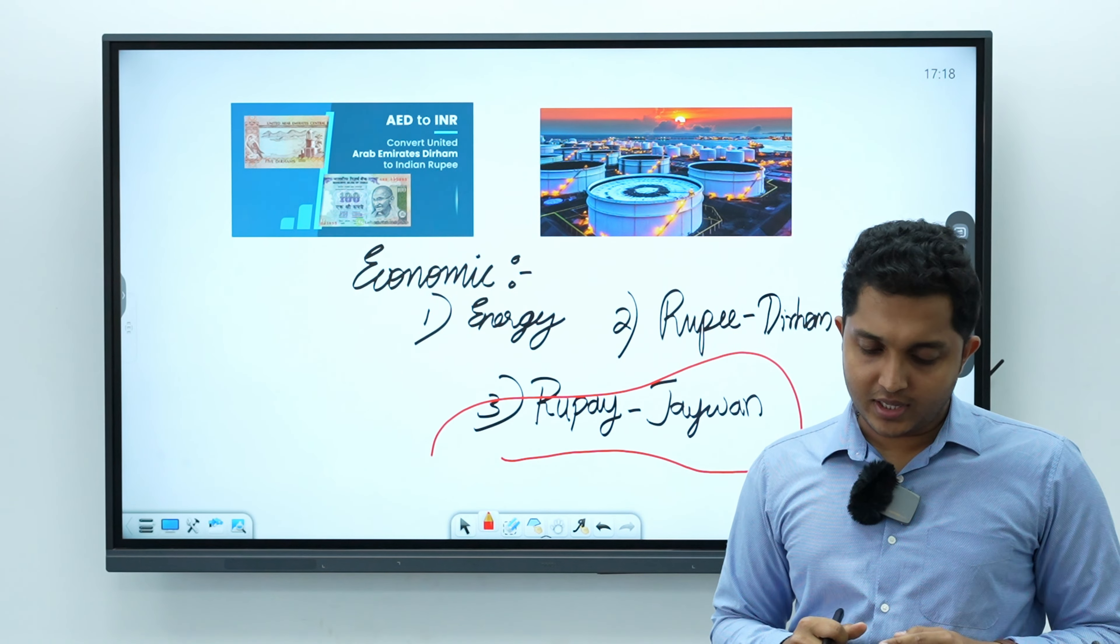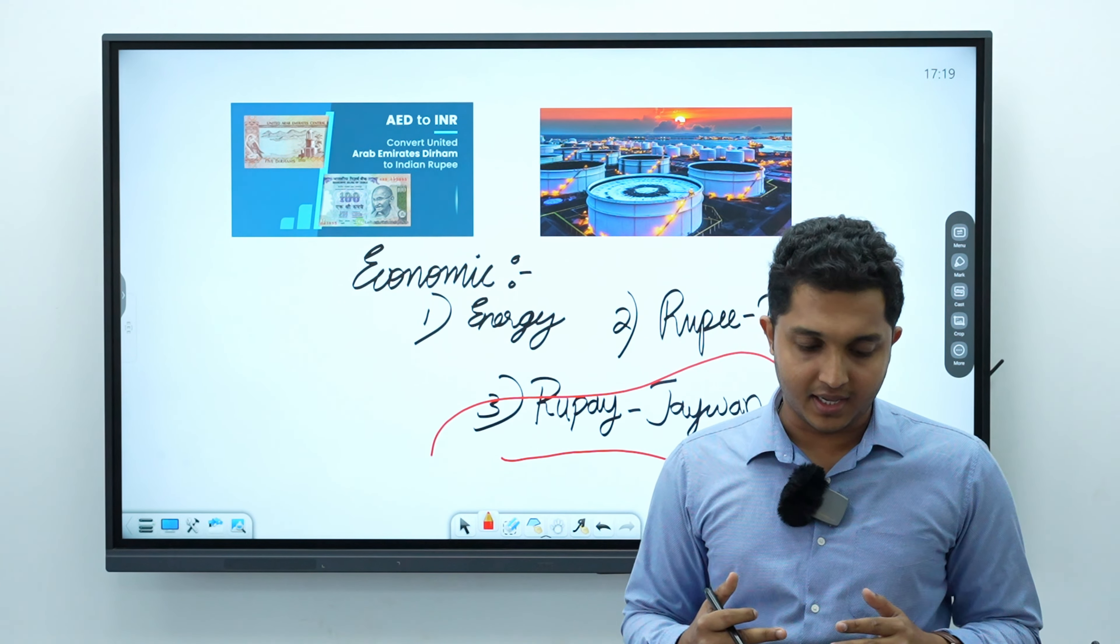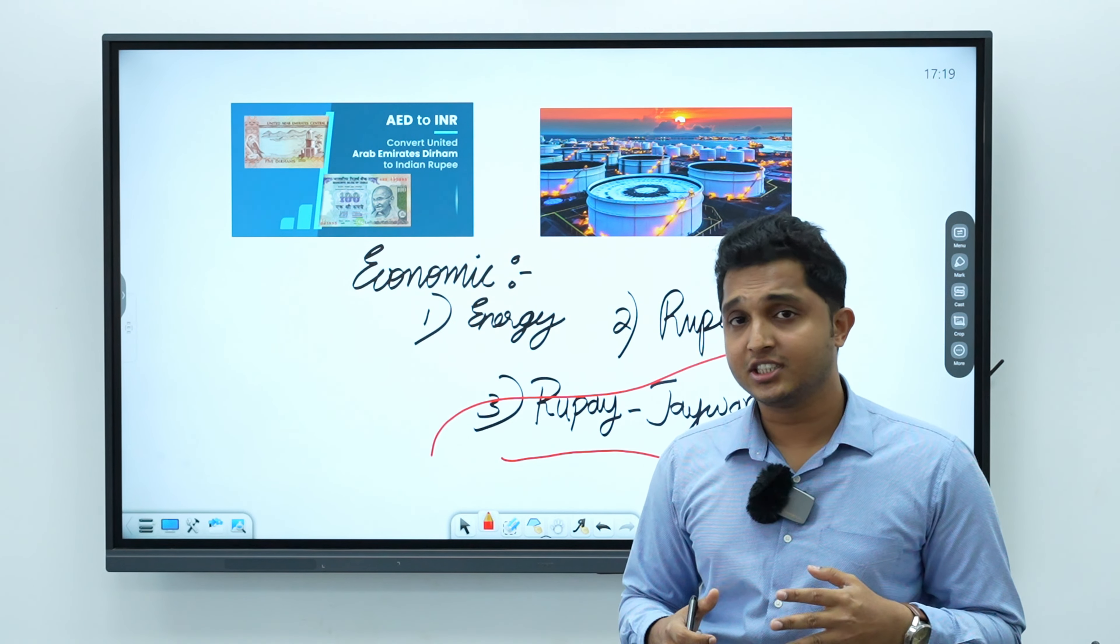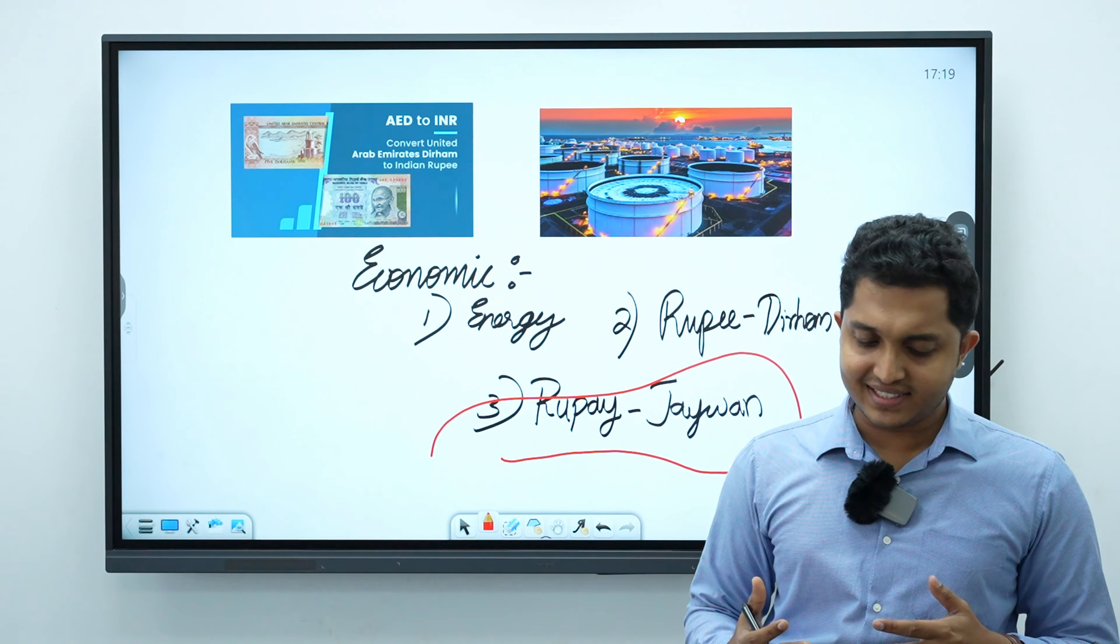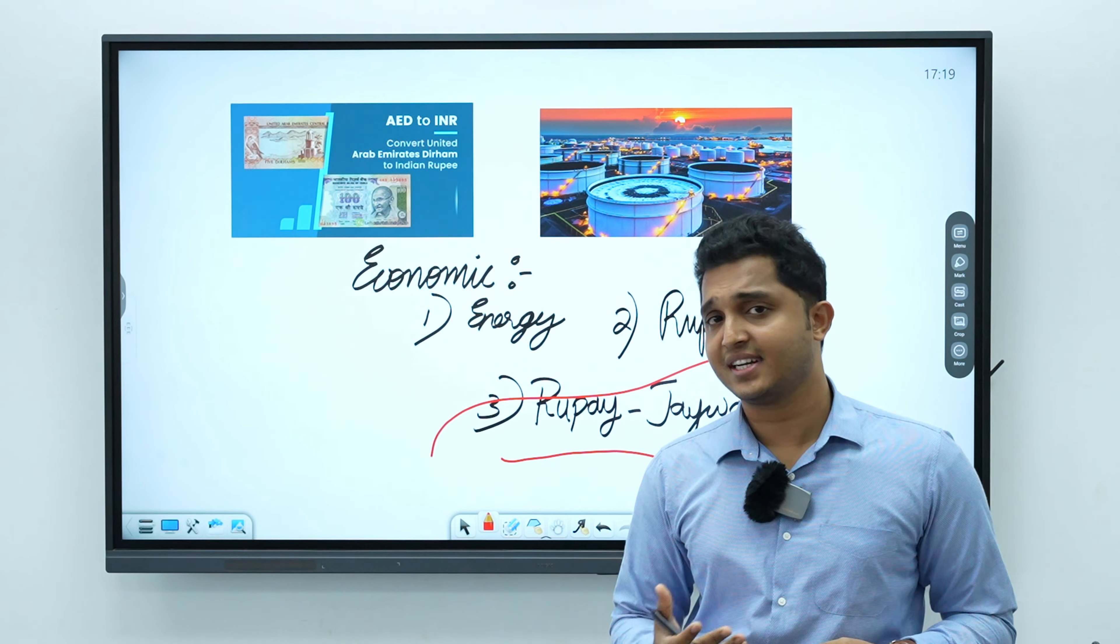It is also important to know that many Indian companies have actually set up manufacturing units either as joint ventures or in special economic zones for cement, building materials, textiles, engineering products, consumer electronics, etc. in UAE.